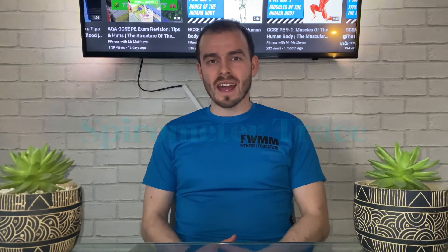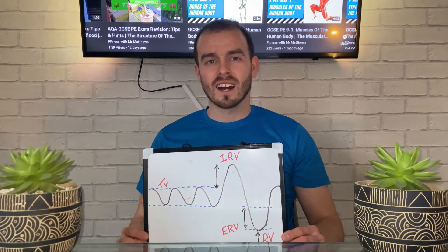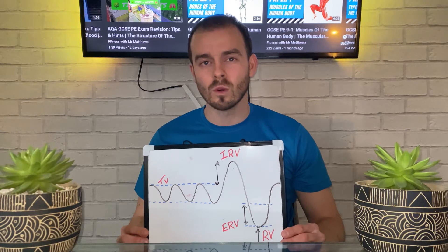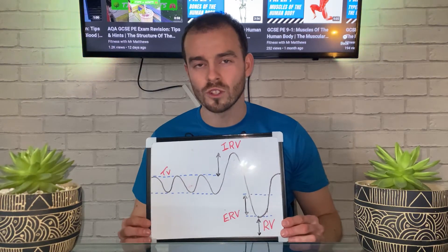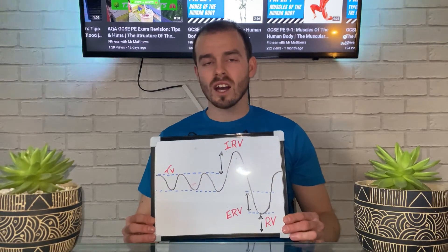A spirometer is a piece of equipment that you might use to measure lung volumes. There are four types of lung volume that you need to understand: tidal volume, inspiratory reserve volume, expiratory reserve volume, and residual volume. I have my small whiteboard here to help support your understanding.